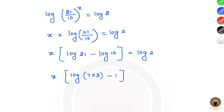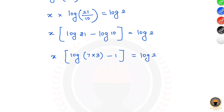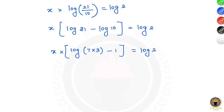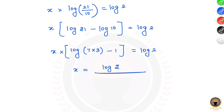With log 10 equal to 1, we close the bracket. Solving for x: x equals log 2 divided by (log 3 minus 1). That is the final answer.